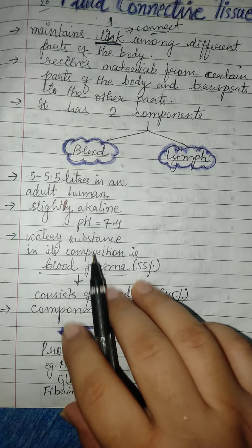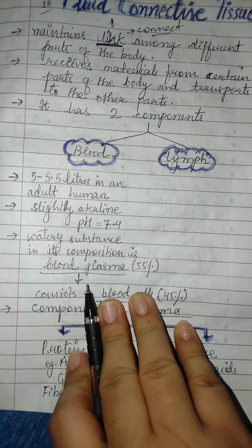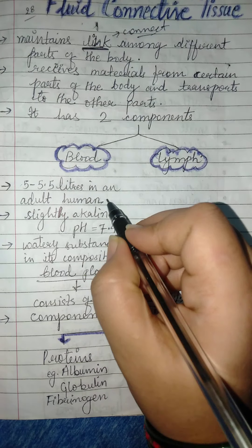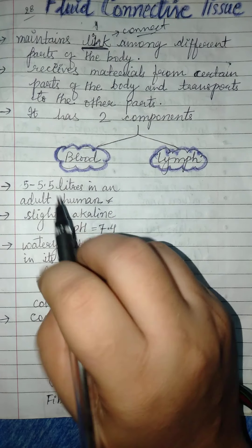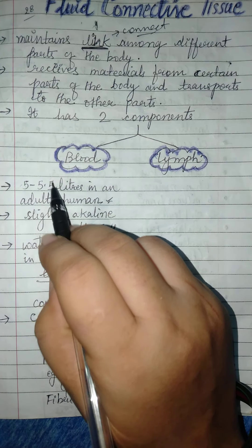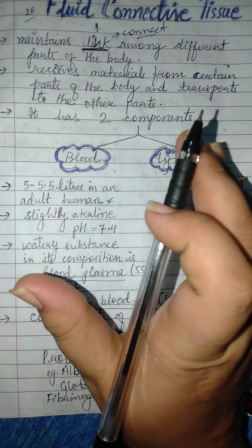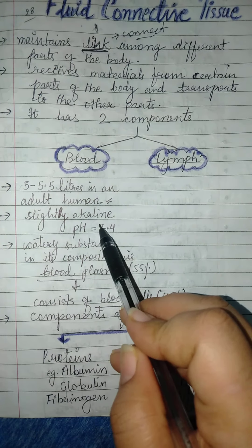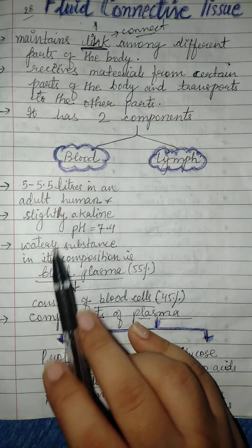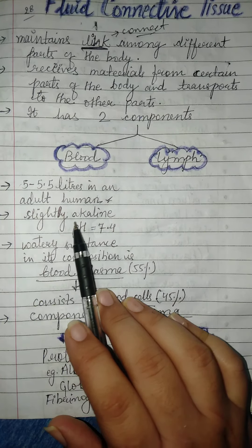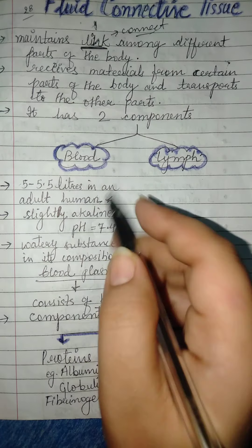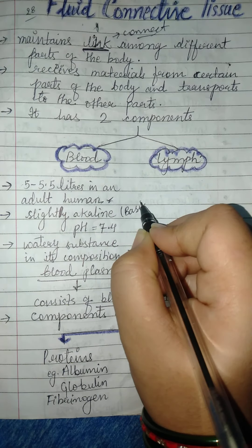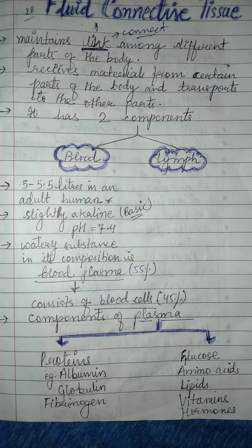Blood, which we normally call 'khun', is reddish in color. In an adult person there is 5 to 5.5 liters of blood. The pH of blood — its nature — is slightly alkaline, or you can say slightly basic in nature.